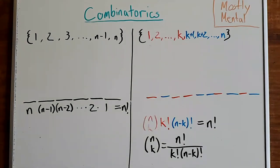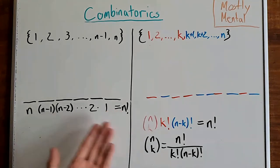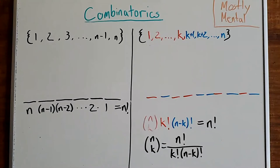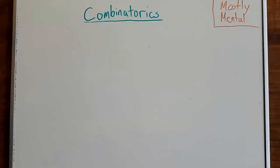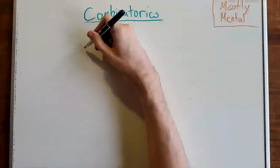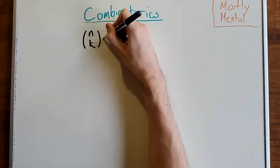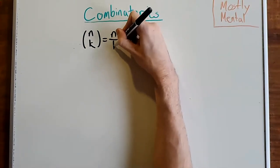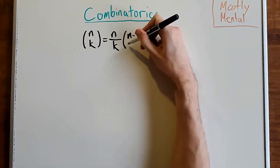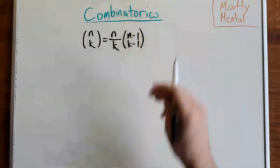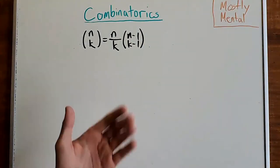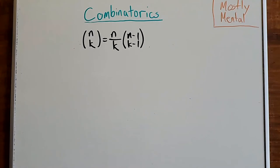And that really gets at the heart of combinatorics: we've taken a problem, solved it in two different ways, and set the answers equal to each other to learn something new. Let's try an example. Let's show that n choose k equals n over k times n minus 1 choose k minus 1. We could verify this with the formula, but that doesn't give much insight, so instead let's count something in two different ways.